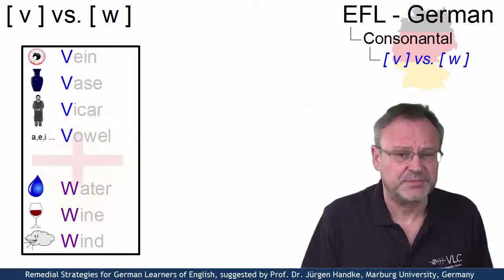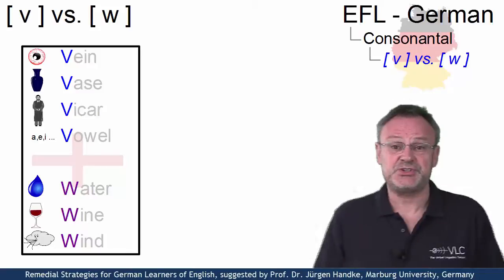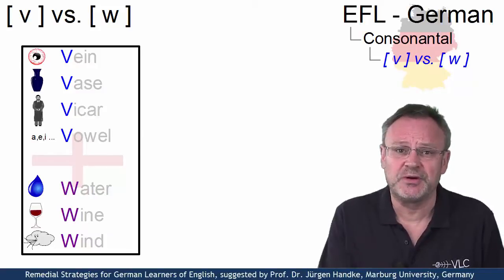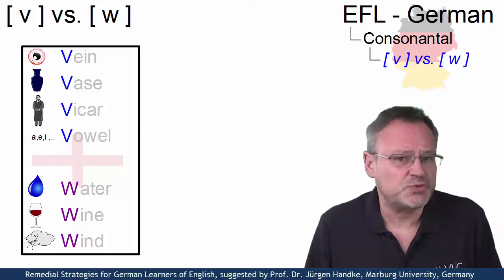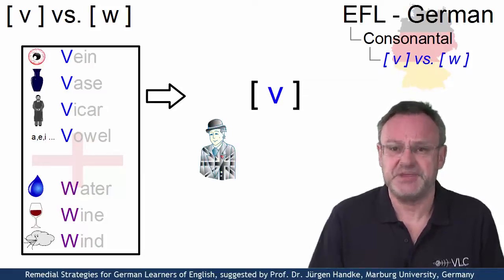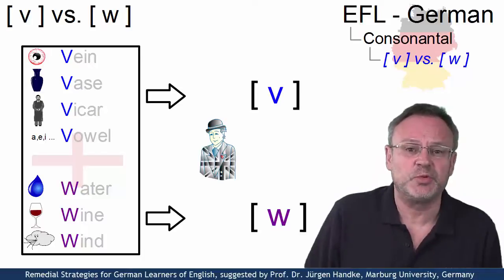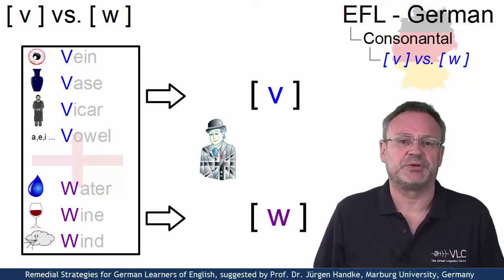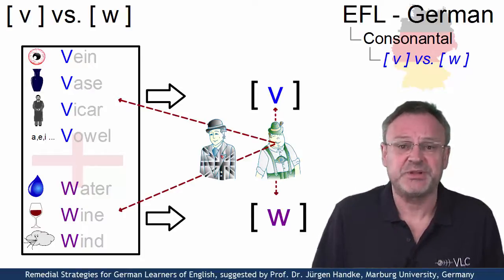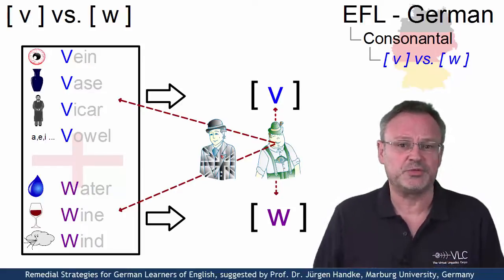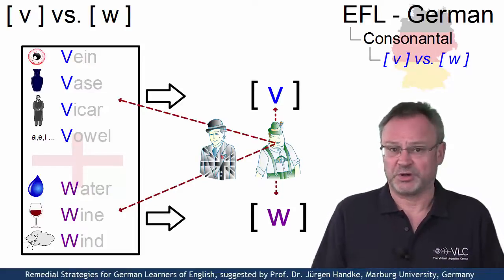In English, these two letters are used too, but they are associated with different sounds: V with a labiodental fricative and W with a labiovelar approximant. And this simply leads to some degree of confusion. What can we do?